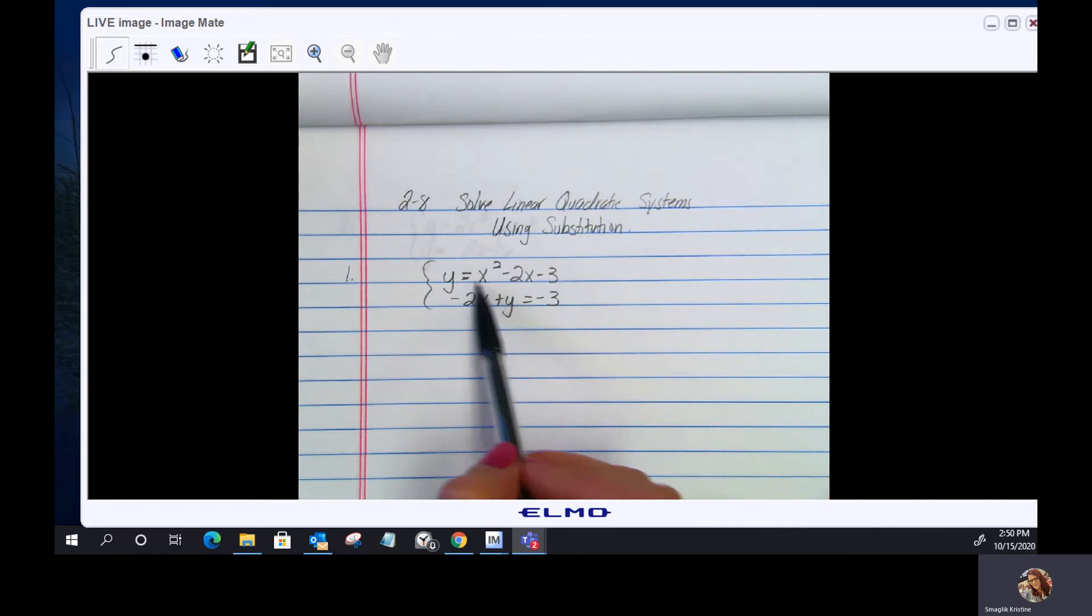Here we have one quadratic and one linear, and again we're looking at those ordered pairs where the graphs are going to intersect. We're just going to do this algebraically.